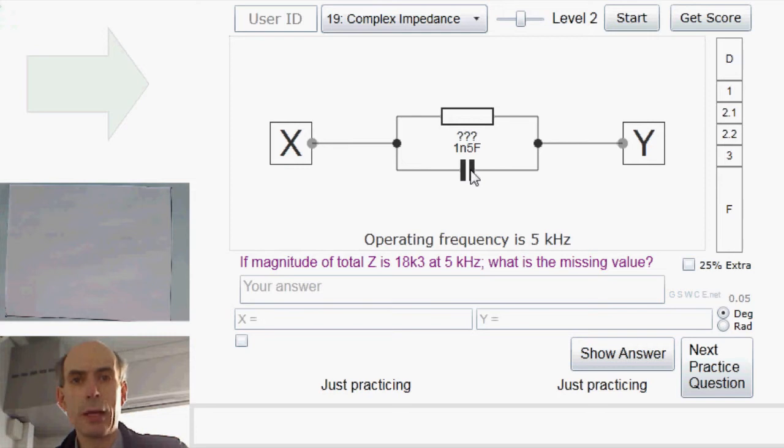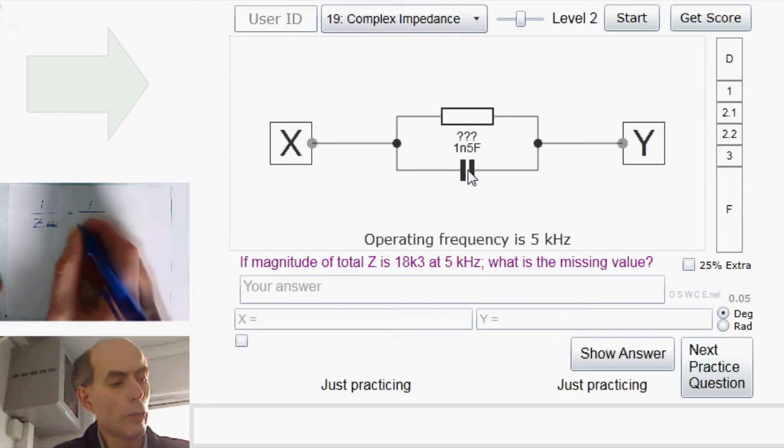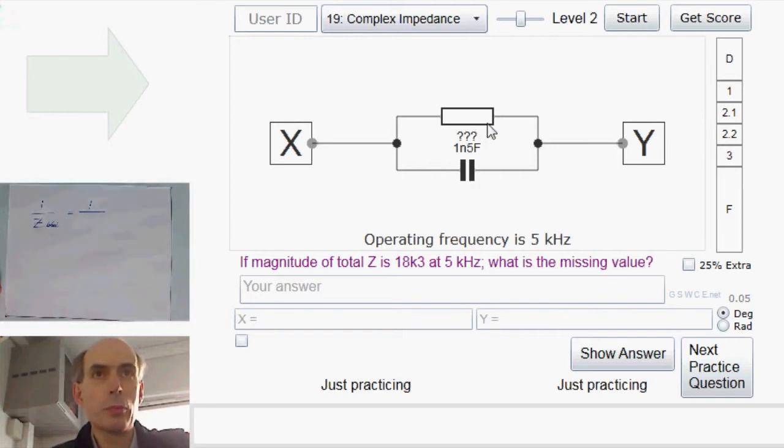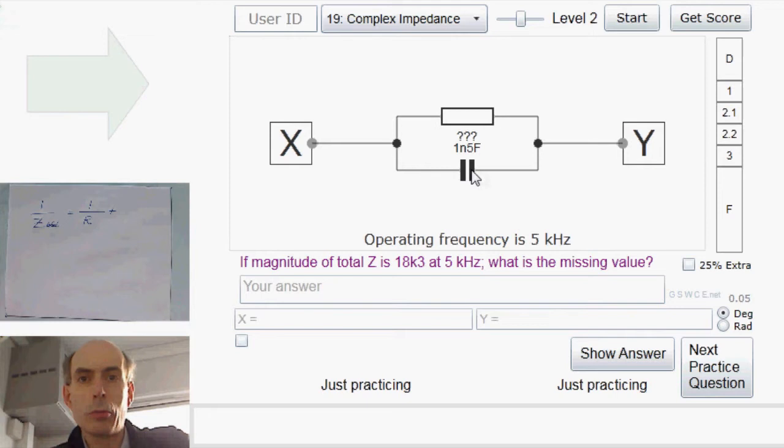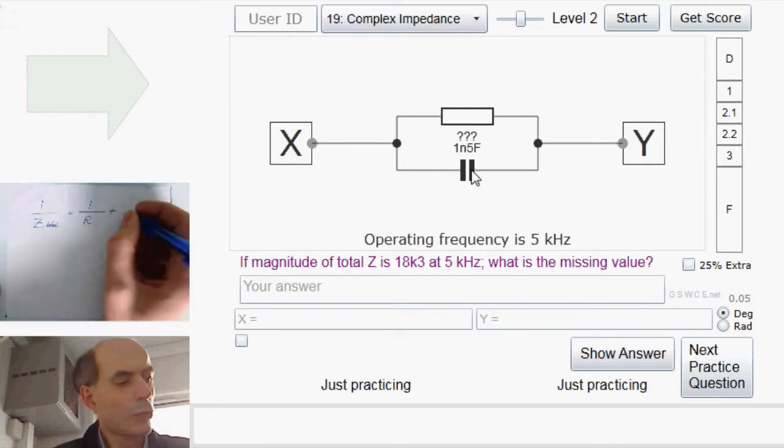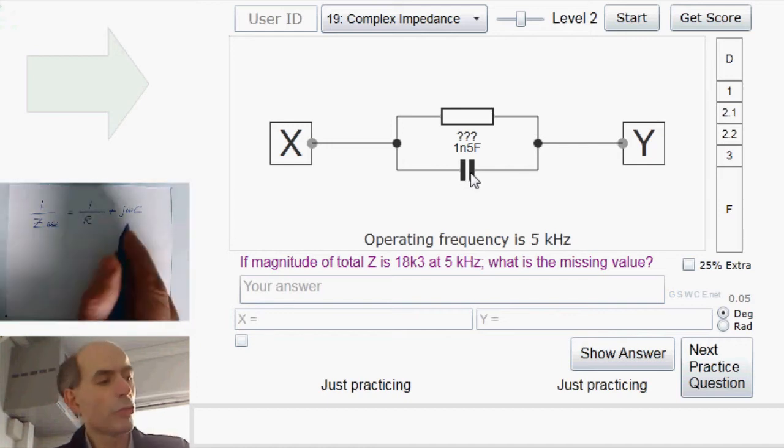And a capacitor has an impedance which is negative and purely imaginary. What we can write here is that 1 over the total impedance is 1 over the value of this resistor, which is currently unknown, plus 1 over the complex impedance of this capacitor, which is just J omega C. Since the complex impedance of a capacitor is 1 over J omega C, the inverse of the complex impedance, sometimes called the complex admittance of the component, is just J omega C.